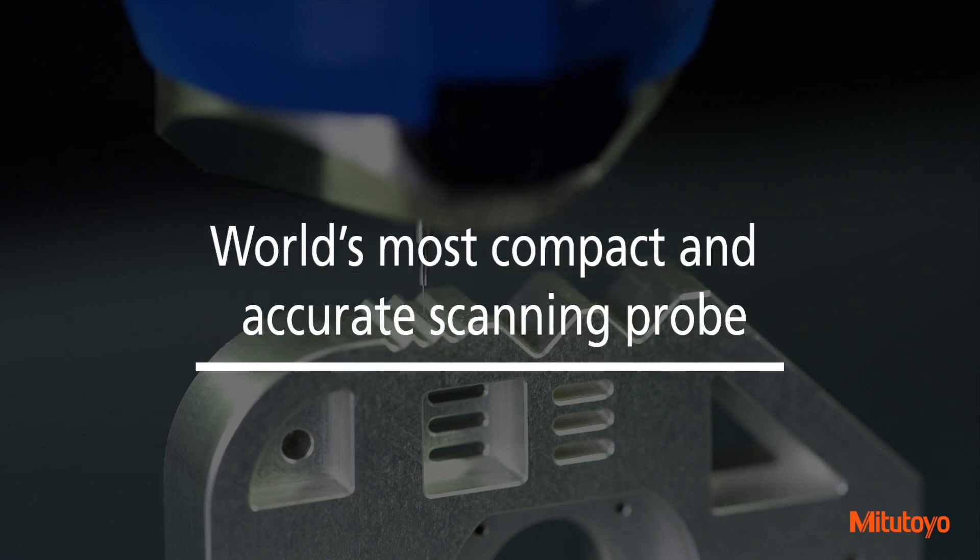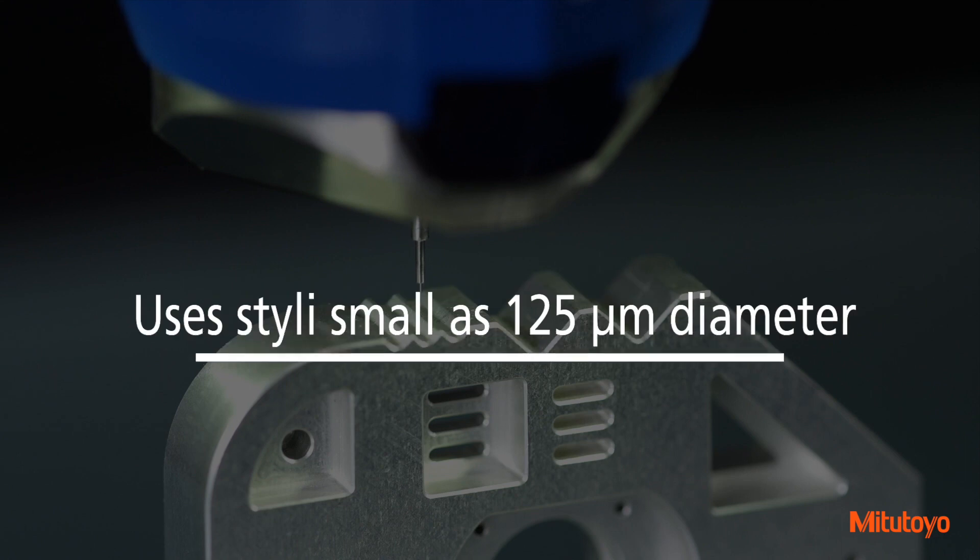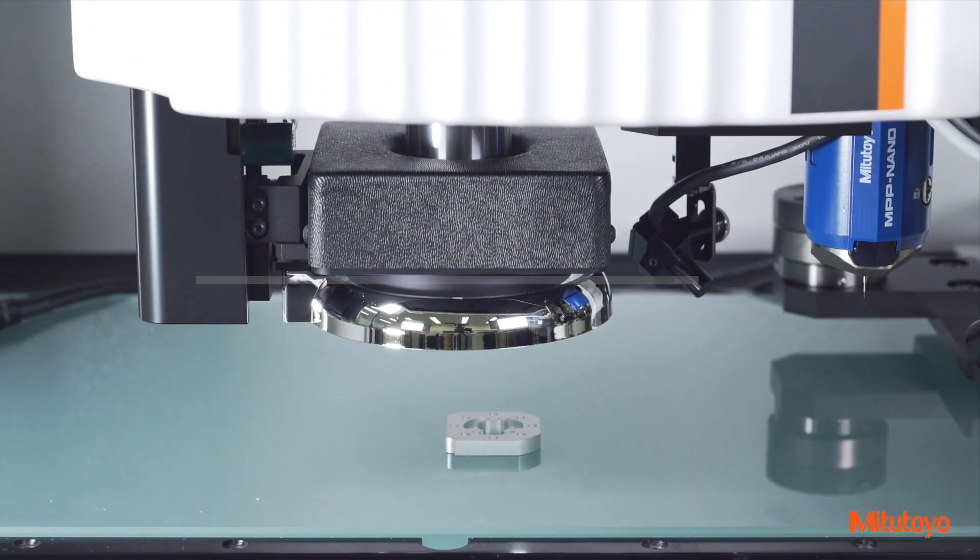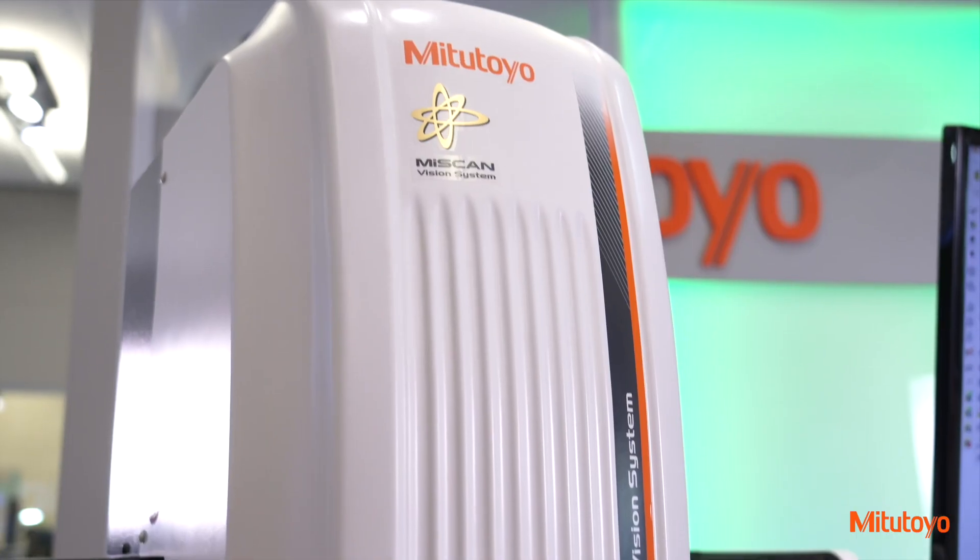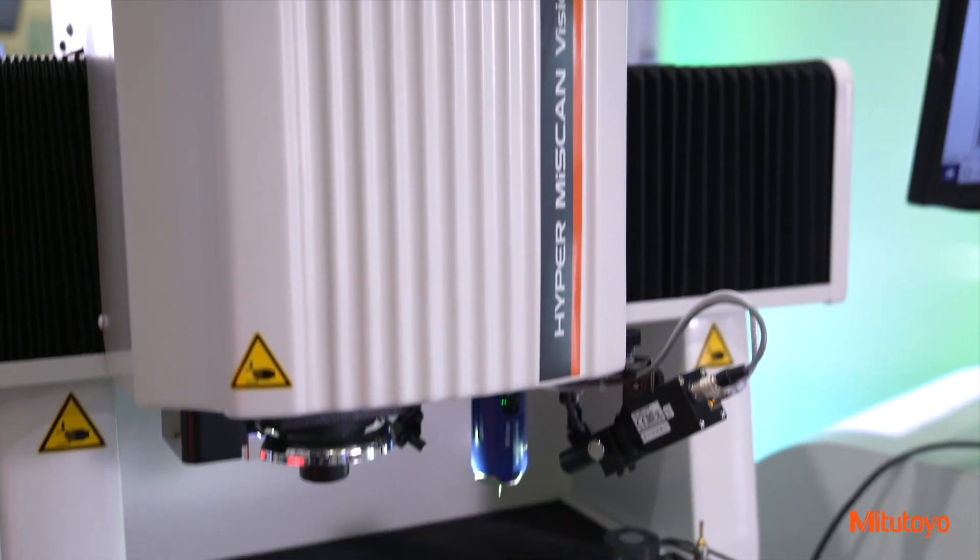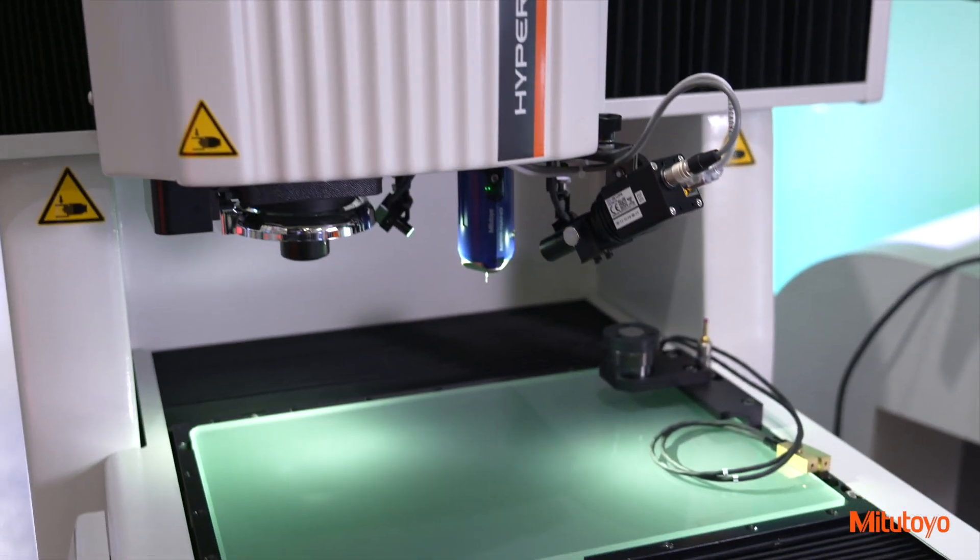The MPP Nanoprobe is the world's most compact and accurate scanning probe, and it can use styli as small as 125 micrometer diameter. An observation camera makes measurement setup easy. The SP25M scanning probe is also supported to measure small and large-sized workpieces and features.